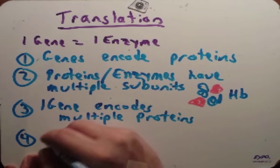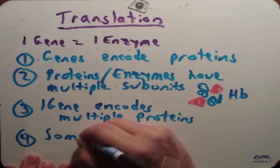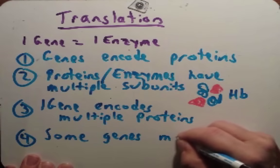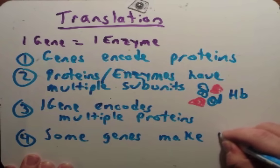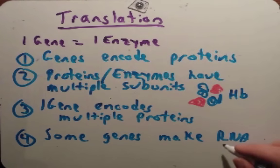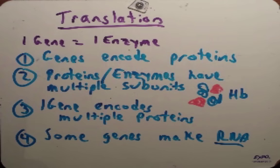The last exception is that some genes make RNA as their final product. I'm not talking about messenger RNA — I'm talking about things like tRNA and ribosomal RNA. Those don't go on to make a protein; the RNA is the final product. The snRNA, the small nuclear RNAs that are important in the splicing of introns, those are not proteins — they just stay as RNA.